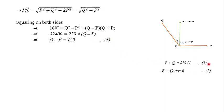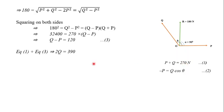We now have two equations: P + Q = 270 Newton and Q − P = 120 Newton. Adding these two equations together gives 2Q = 390 Newton.